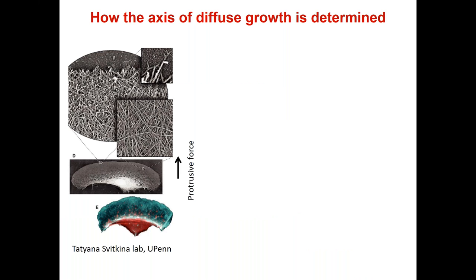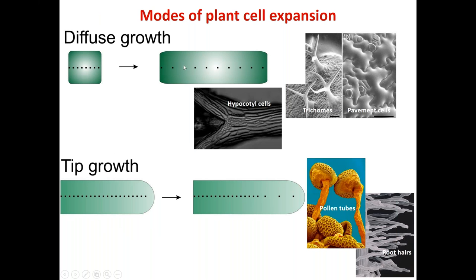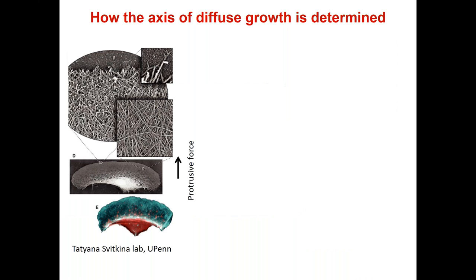Diffuse growth is happening in a directional manner — a cell is extending sideways, not vertically, rather than just ballooning to be roughly spherical. There is a directionality, which is important so that the root or shoot grows in a directional manner. How this directionality is achieved is very different between animals and plants. Our cells are soft, compliant, squishy compared to plant cells. In crawling animal cells like keratocytes or fibroblasts, a dense actin cytoskeleton of branched actin filaments pushes on the plasma membrane to extend it, combined with adhesion to the substrate.